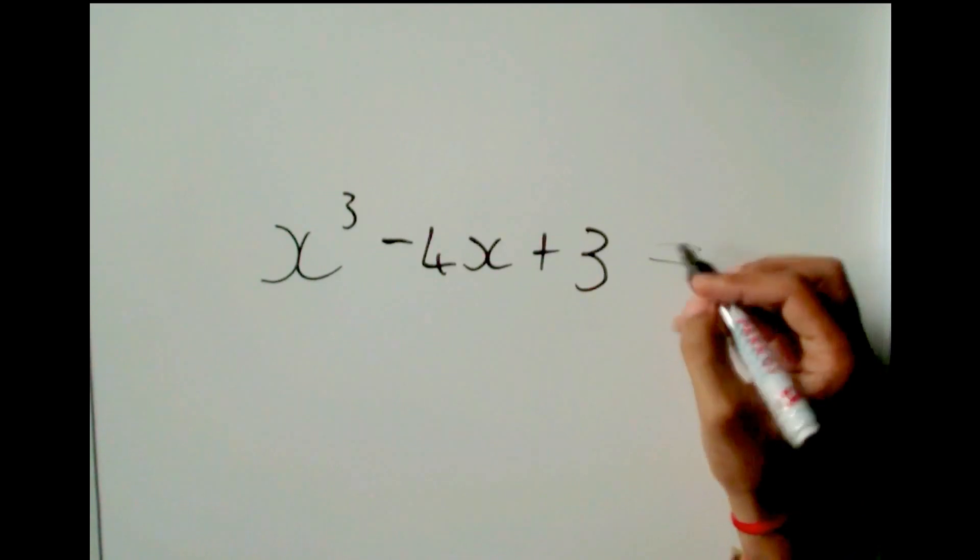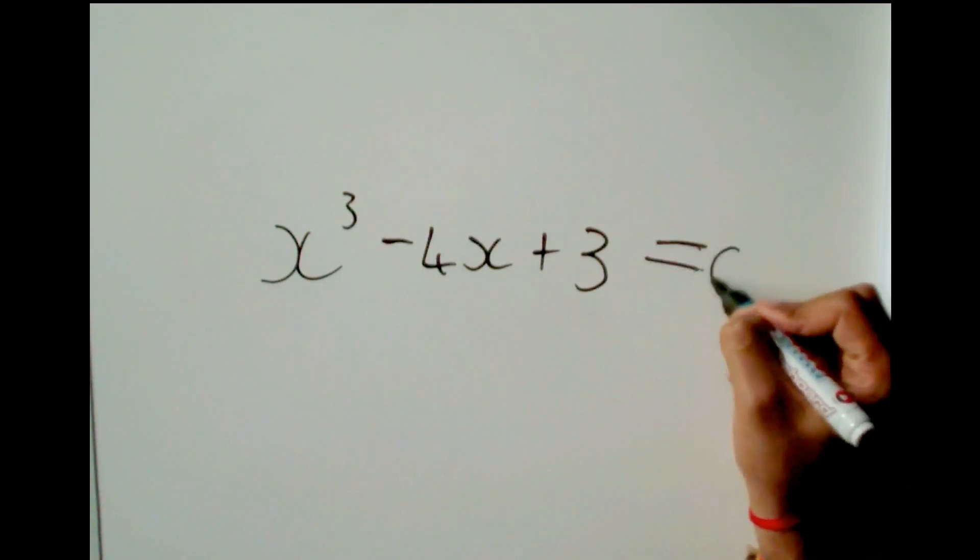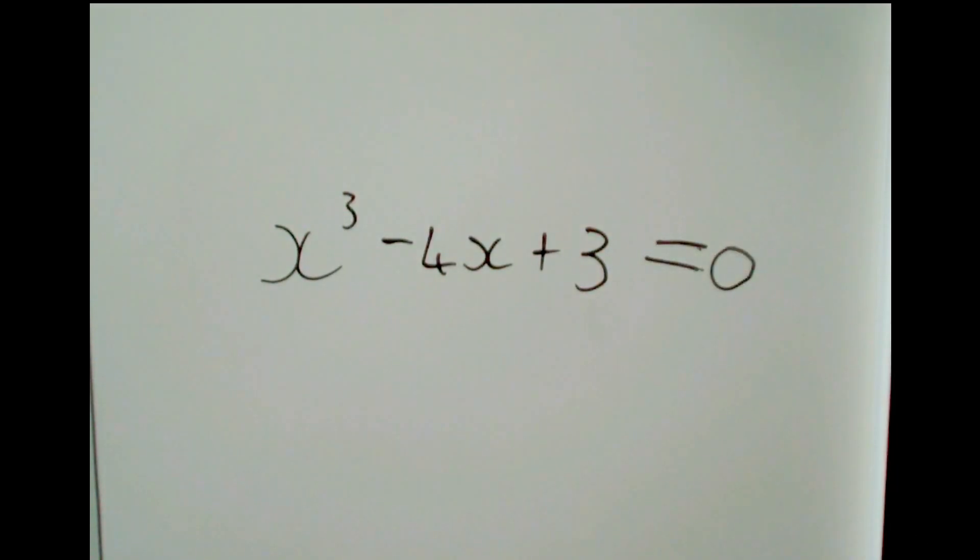First, when we want to factorize, we have to get everything equal to zero, as we always do when we factorize. Now the first thing we need to do to factorize something of degree 3 is that we need to guess a number that works.